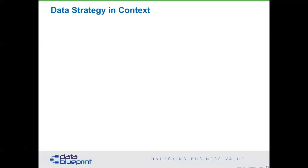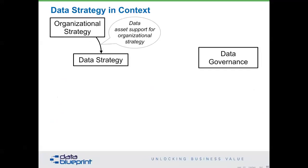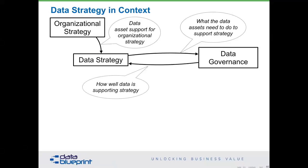Let's look at data strategy in context. What the data assets need to do right now — not forever, but for a defined period — let's say for the next 30 days our focus is going to be addressing the challenges that we have in data. And then the feedback from the governance group is: how well is data supporting the strategy? That seems reasonable. You also have domain over IT projects and how that supports strategy.